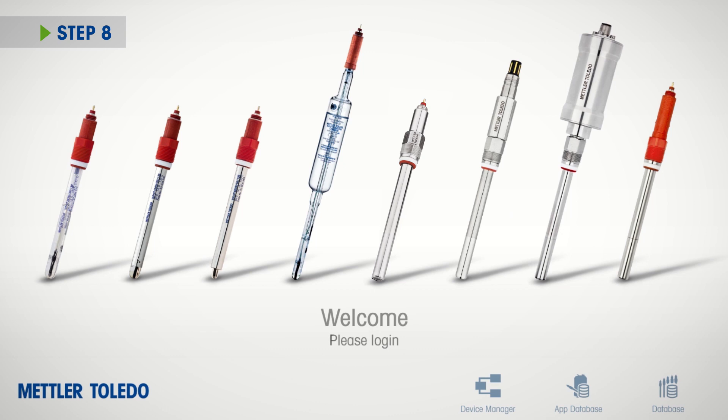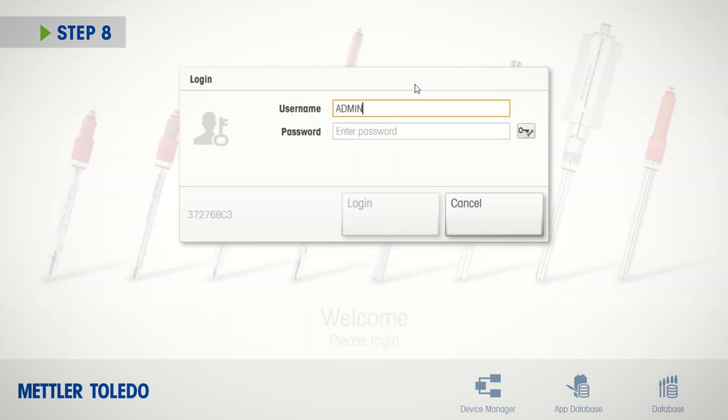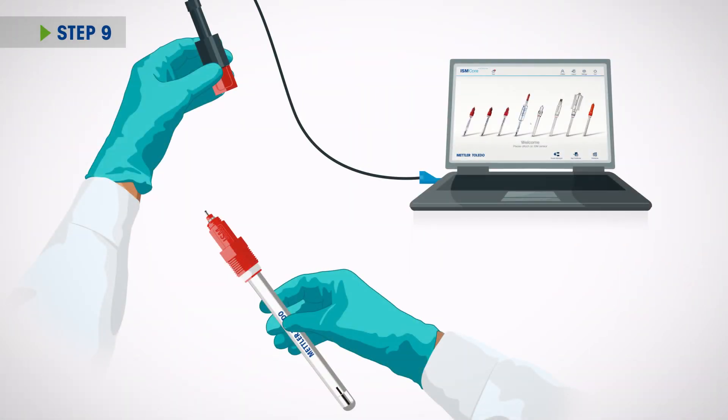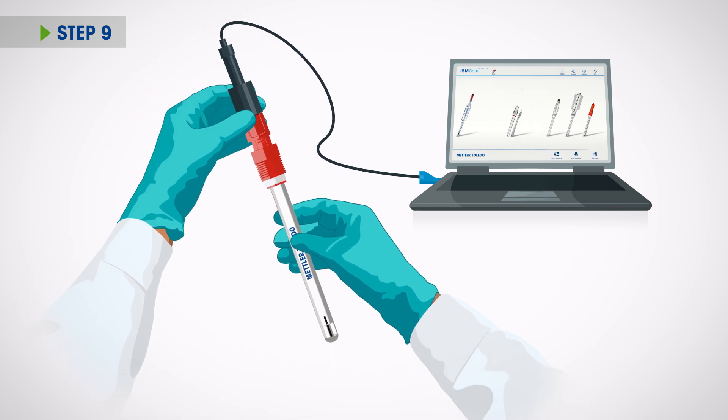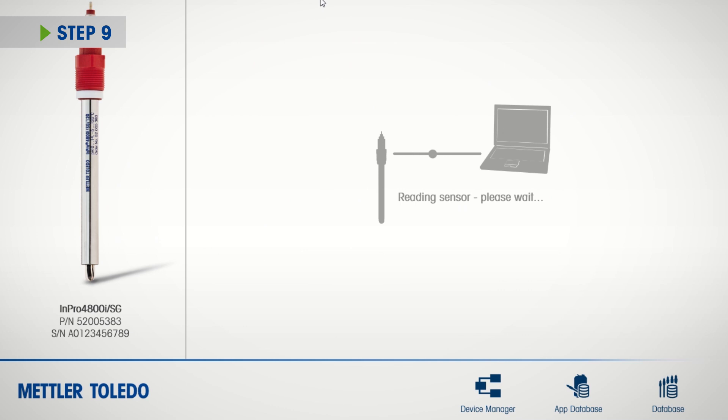Start the ISM Core software. Enter your username and password to log in. Attach the sensor to the ISM USB connector. Wait for ISM Core to read the sensor information. The software will then guide you through the next steps.